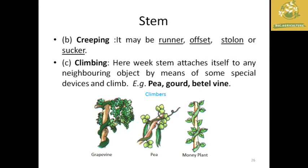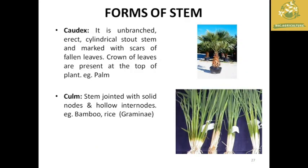The second type of weak stem is creeping, which includes runners, stolons, and suckers. The third type is climbing, found in peas, betel vine, and pepper — these plants attach to neighboring objects using special climbing devices to get support from other structures.